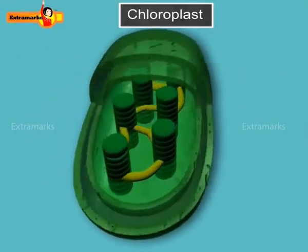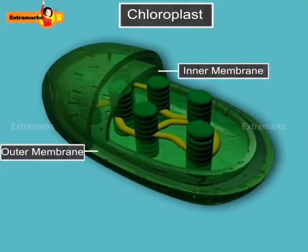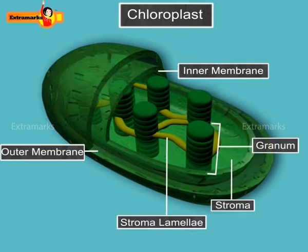Each chloroplast is surrounded by a double-layered membrane, that is, the inner membrane and the outer membrane. Inside the membrane, it contains stroma and grana.